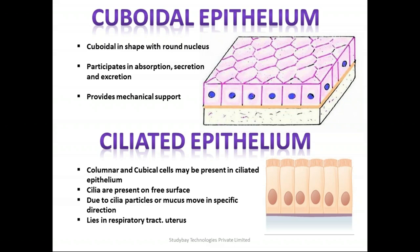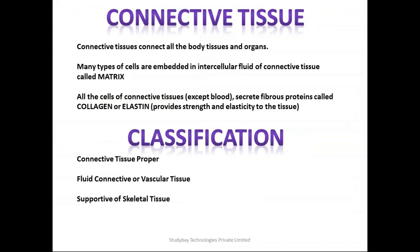Now we have connective tissue. Connective tissues are the tissues that actually connect all the body tissues and organs. Many types of cells are embedded in the intercellular fluid of the connective tissue, and these are called the matrix. All cells of connective tissue except blood cells secrete fibrous proteins called collagen or elastin, which provide strength and elasticity to the tissue. These can be classified as connective tissue proper, fluid or vascular connective tissue, or supportive or skeletal connective tissue.